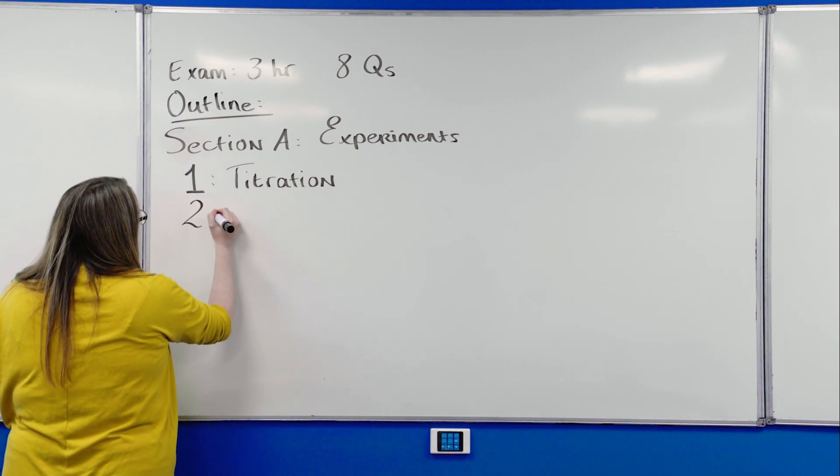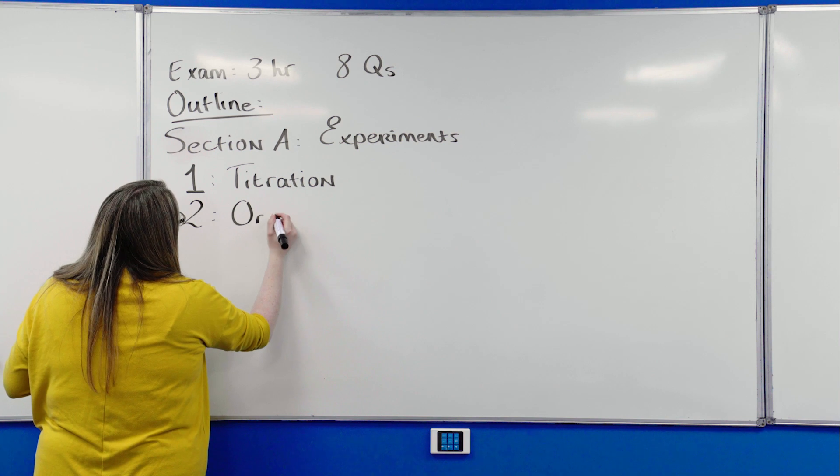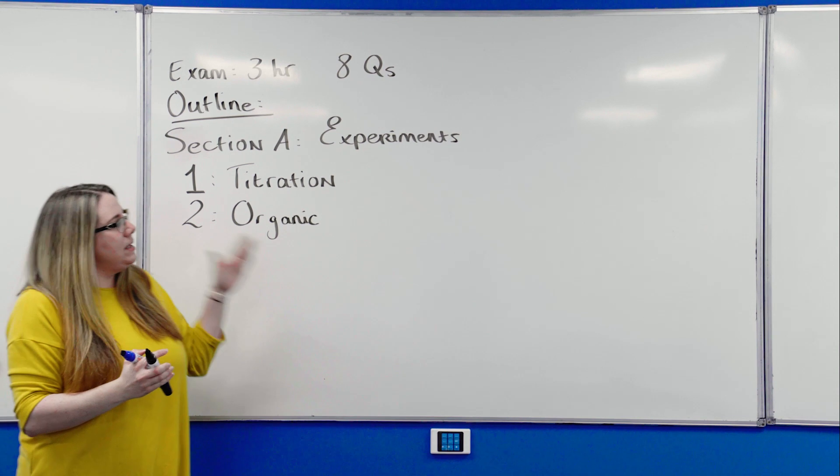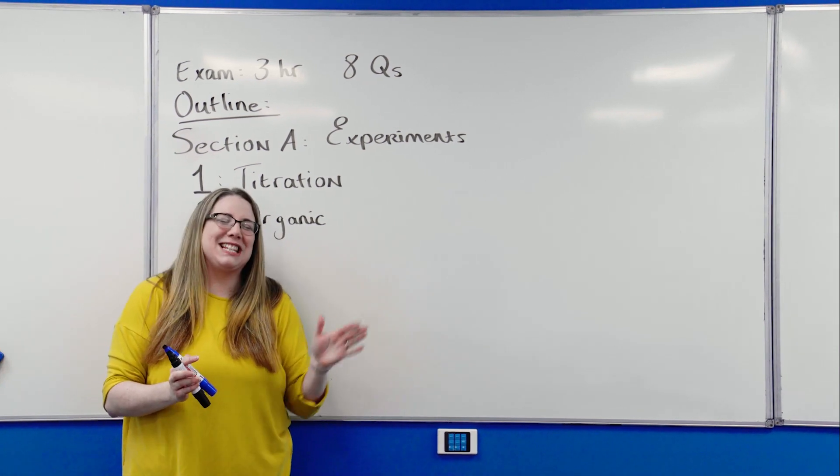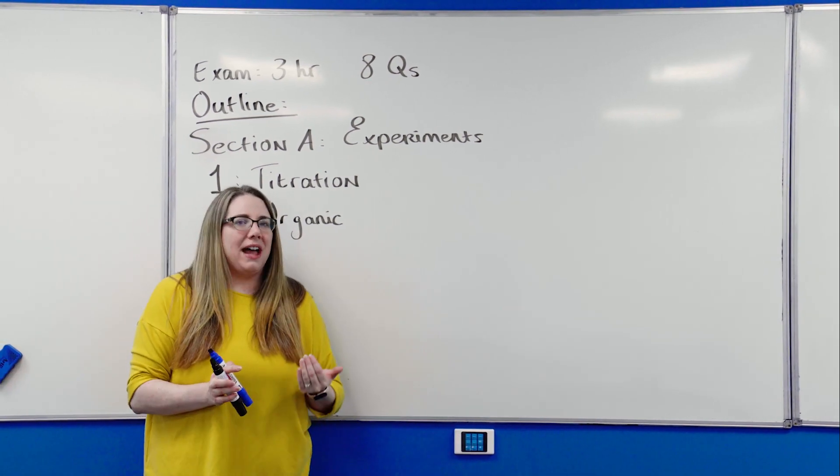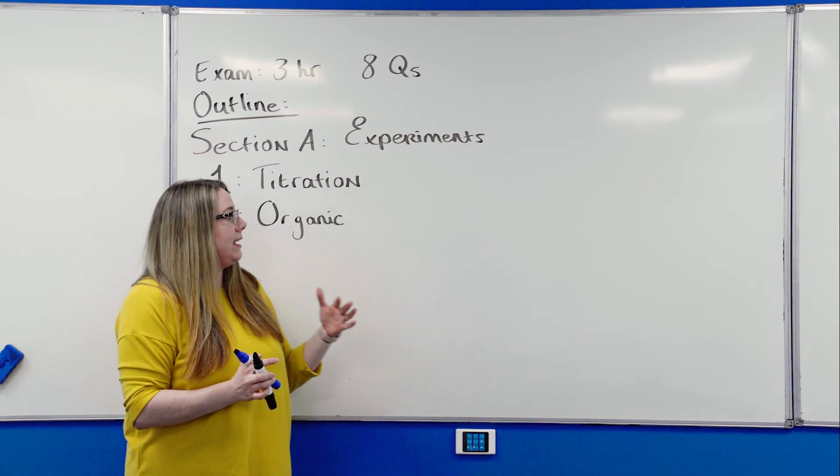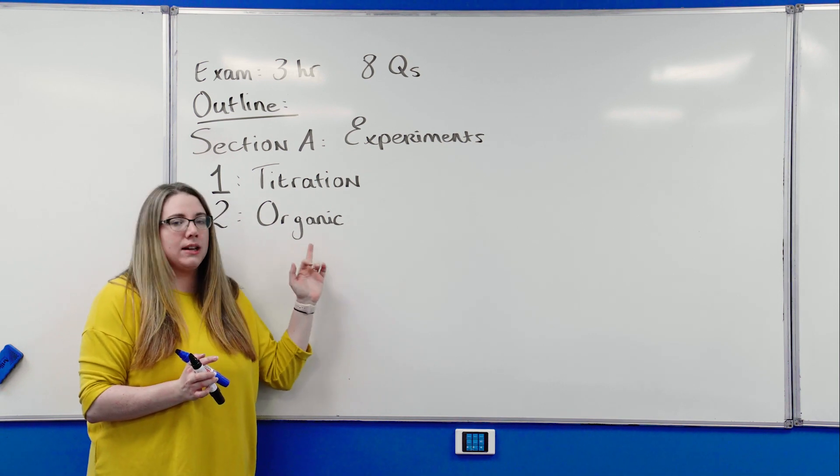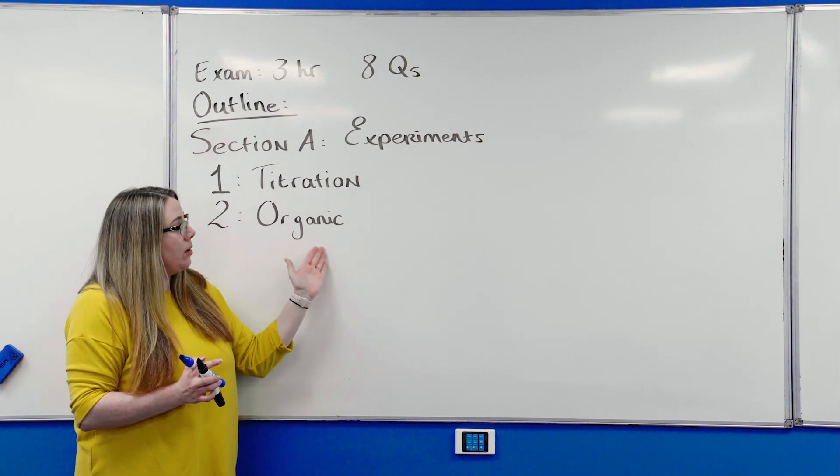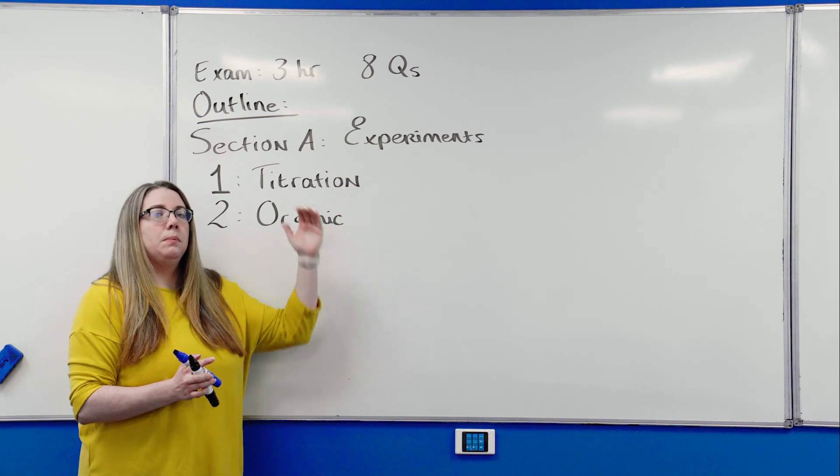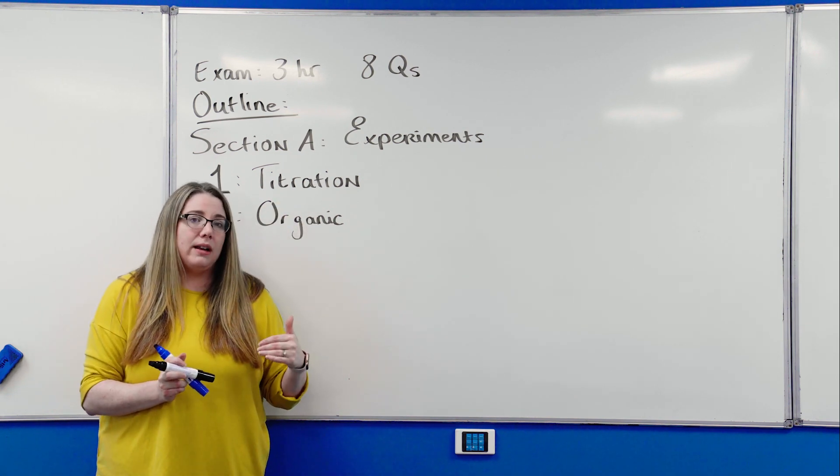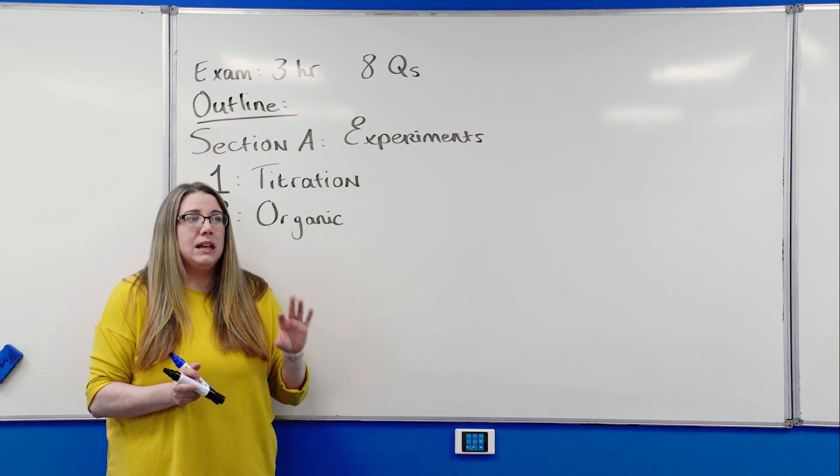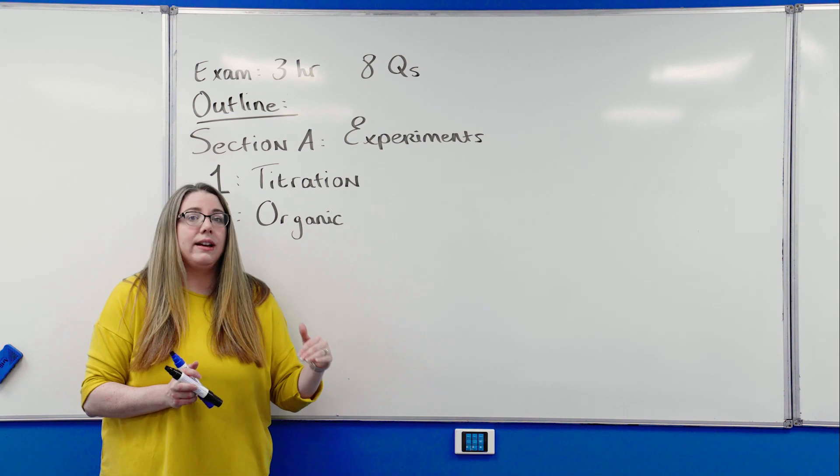Question two is the organic experiment. Now, I hate predicting organic experiments because there's not that many of them. And if you learn off your organic experiments and know every single one of them, they're the ones that actually come up quite frequently in section B as well. So an organic experiment is always question two, but you could also see it in section B as well for considerable marks. We're talking like 12 to 20 marks in section B. So it's worth knowing your organic experiments inside out.